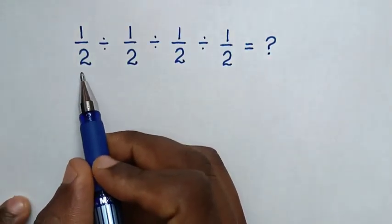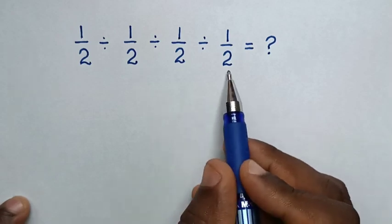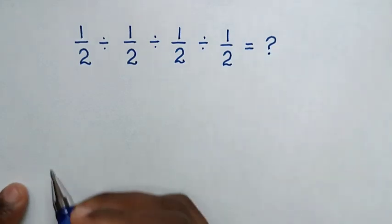Hello! How to solve 1 over 2 divided by 1 over 2 divided by 1 over 2 divided by 1 over 2.